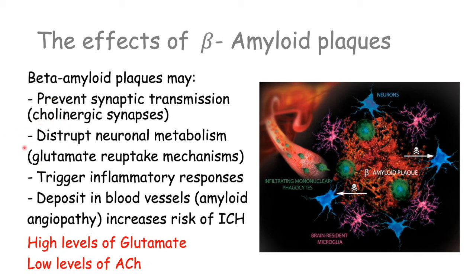These two consequences both lead to neuronal cell death, and that's what we see with the degeneration of neurons. There is also an inflammatory response that takes place with these beta-amyloid plaques, including the infiltration of mononuclear phagocytes, which also contributes to neuronal cell death.